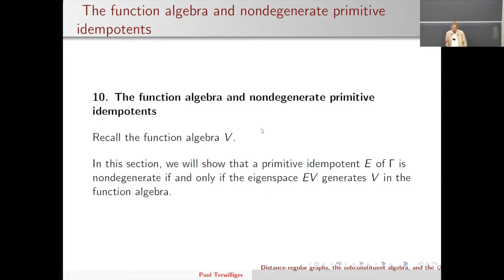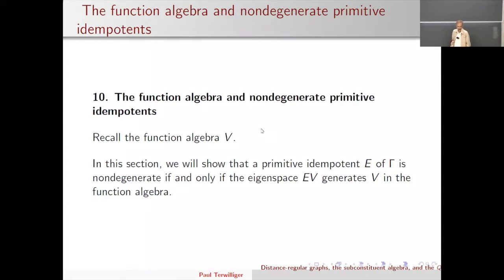I'm going to finish up the second lecture — it'll take me five or ten minutes — and then move on to the third lecture. I should have mentioned at the beginning that you can find the notes for my entire mini course on the conference website next to my abstract. Anyway, we're getting into this section about the function algebra and its connection to non-degenerate primitive idempotents. We're talking about a distance-regular graph gamma, and we're not assuming it's Q-polynomial at this point.